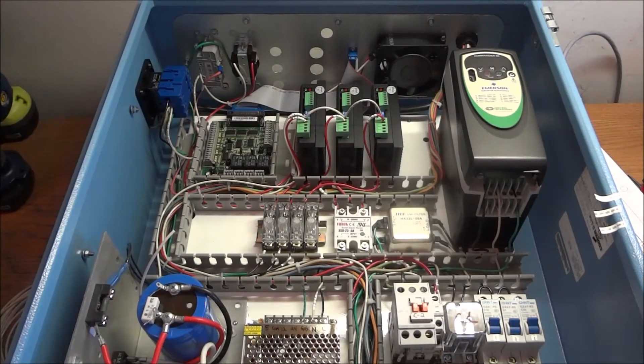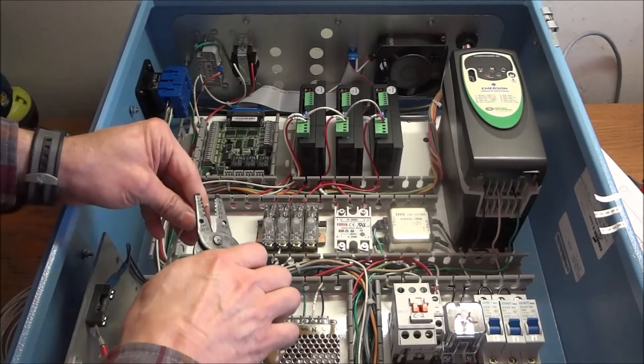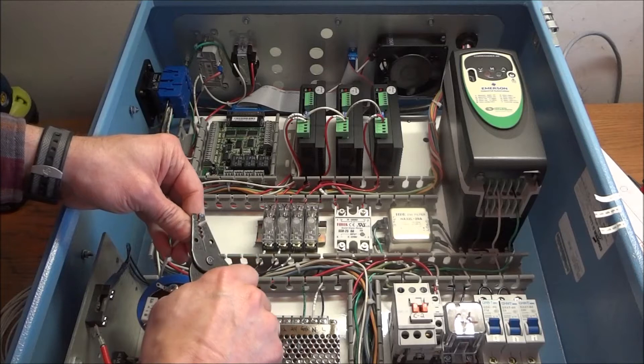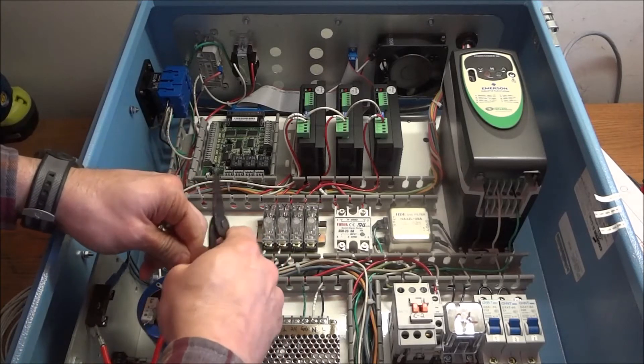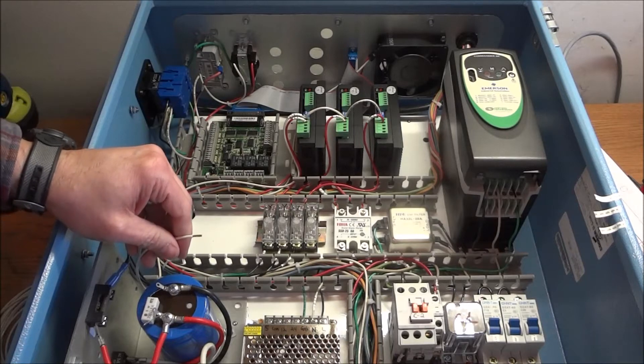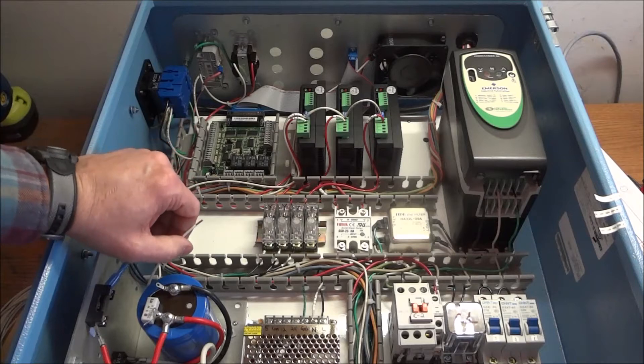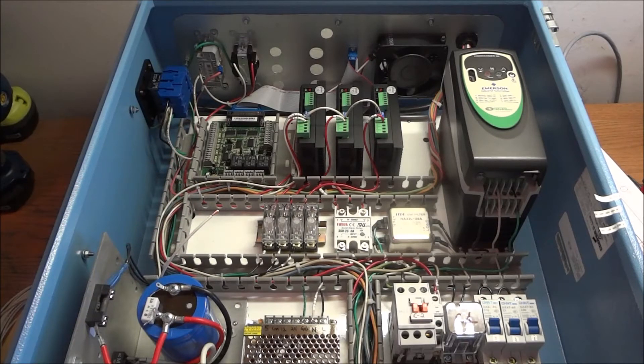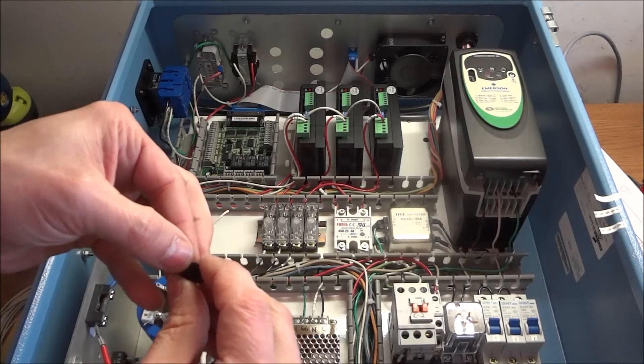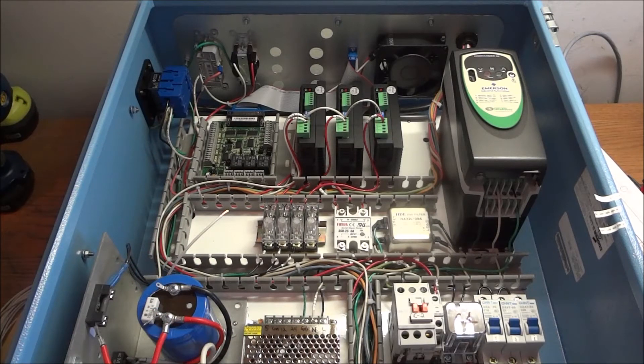Now what I want to do here is I want to solder this connection. I could use a spade connector, but I think I'll just solder it, make for a nicer connection there. I'm going to use a piece of small heat shrink tube in here, slide over the wire first.